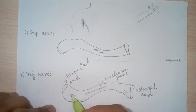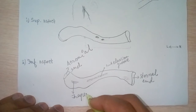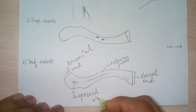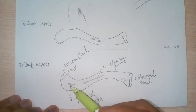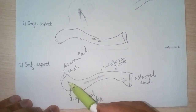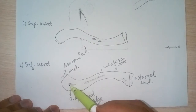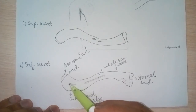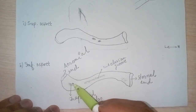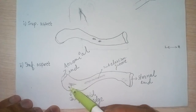This is the ridge called the trapezoid ridge. This area is the attachment of the trapezoid and the conoid parts of the coracoclavicular ligament — joining the coracoid process and the clavicle. This will be discussed further on the joints of the upper limb later on. Keep in mind that this is the trapezoid ridge, where the trapezoid and conoid parts of the coracoclavicular ligament attach.